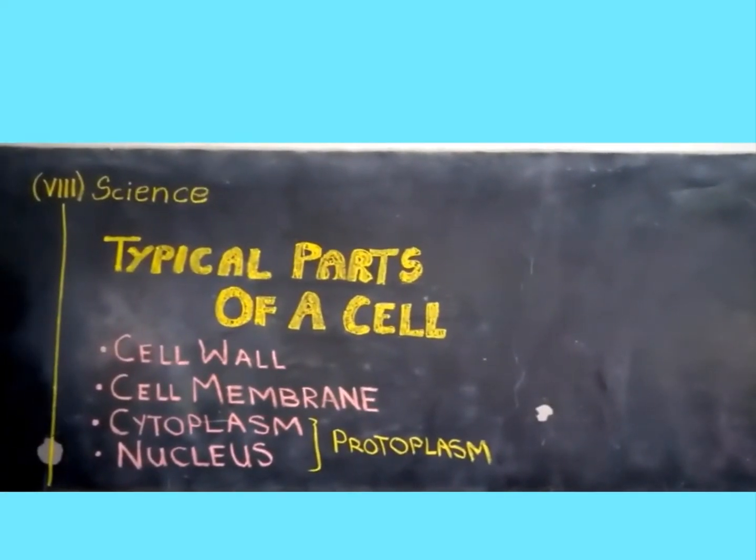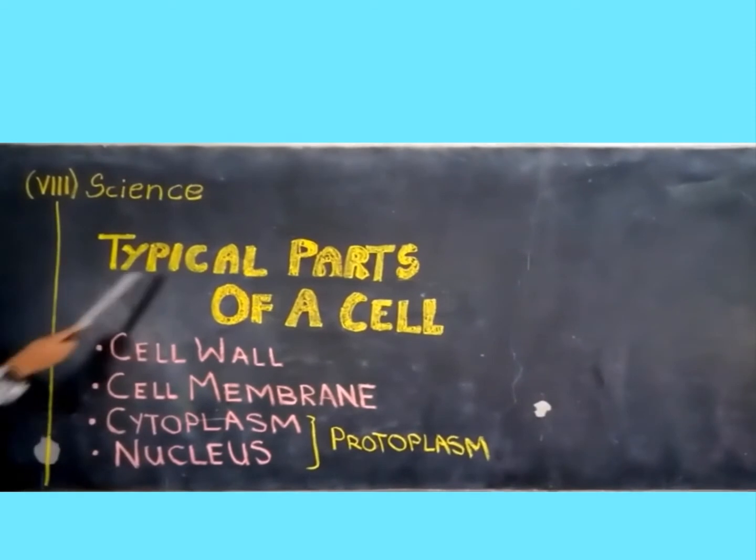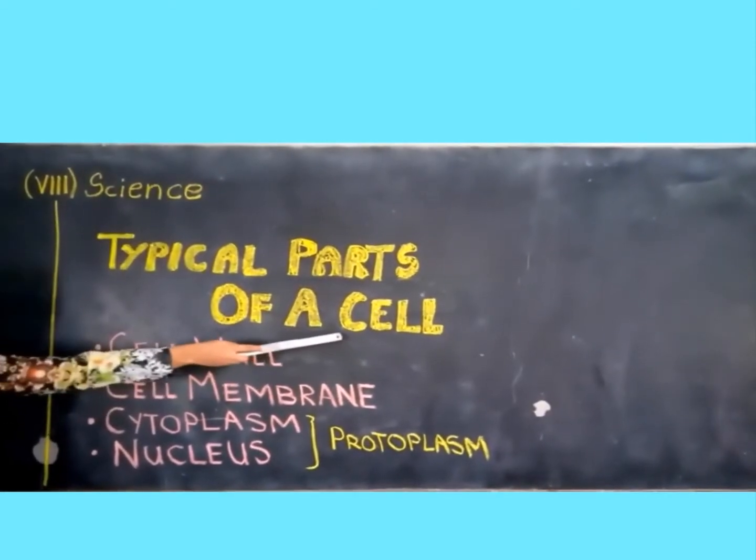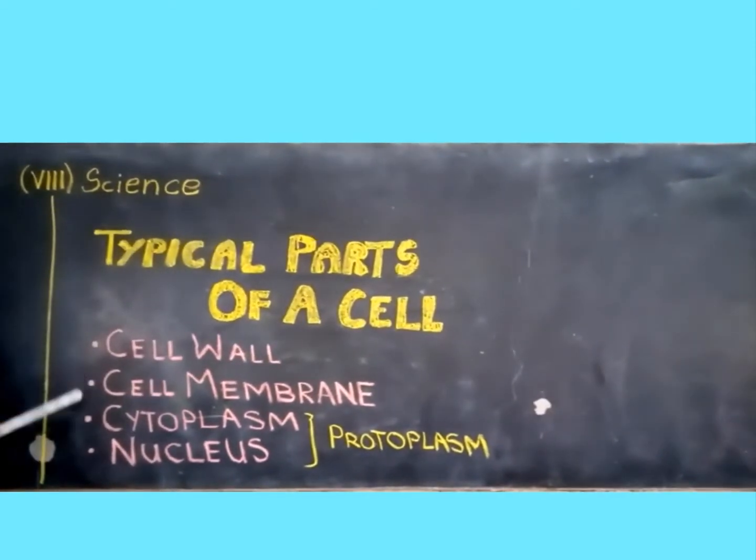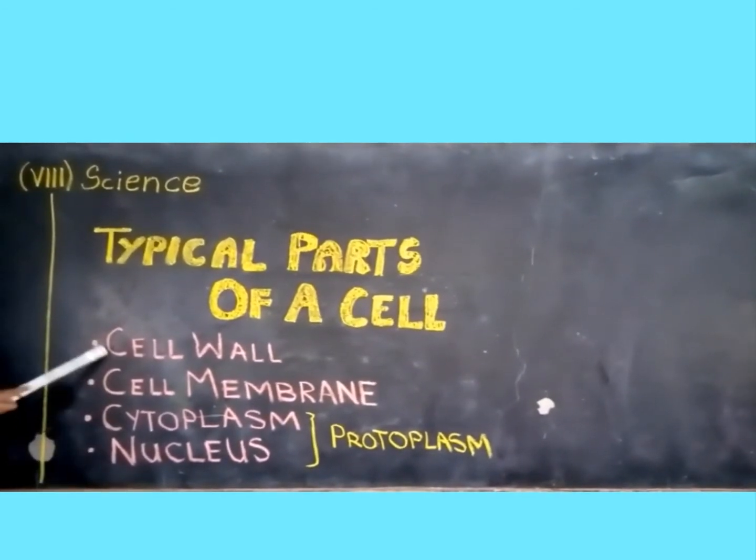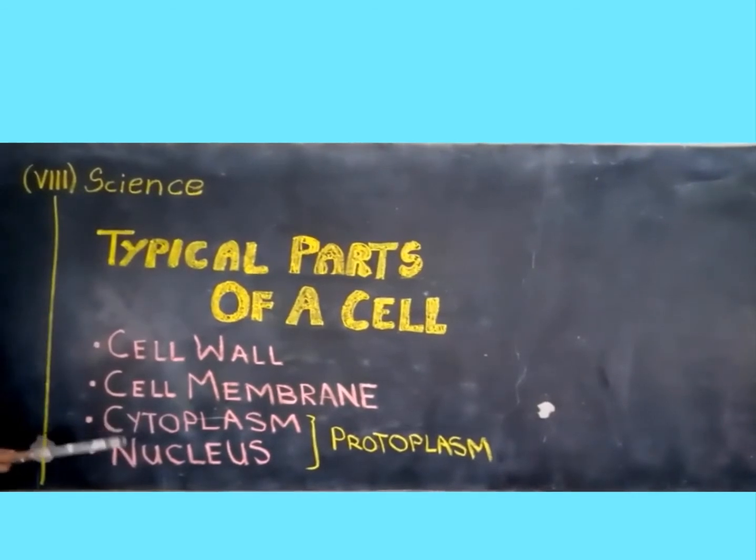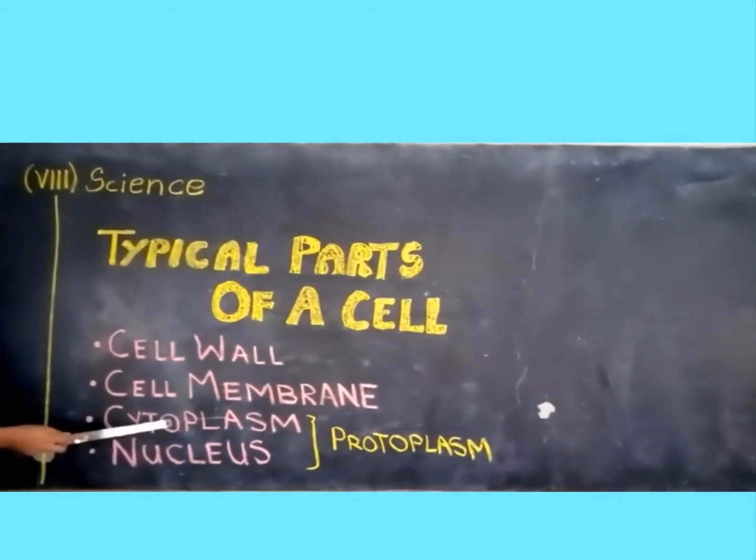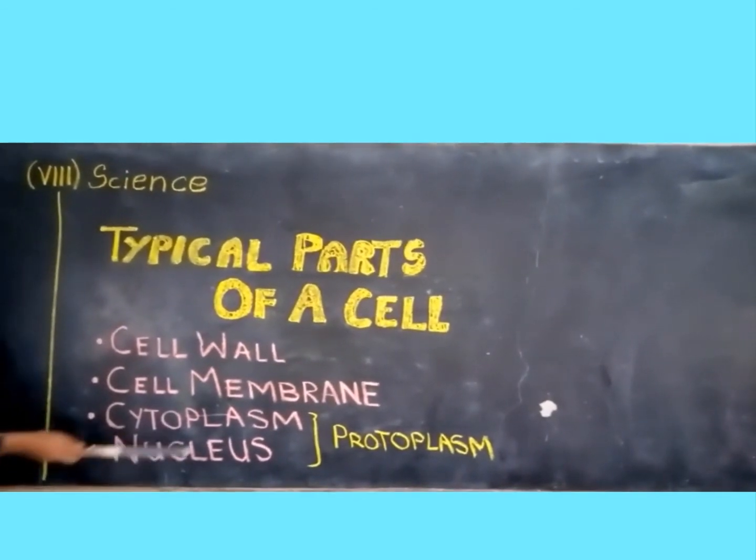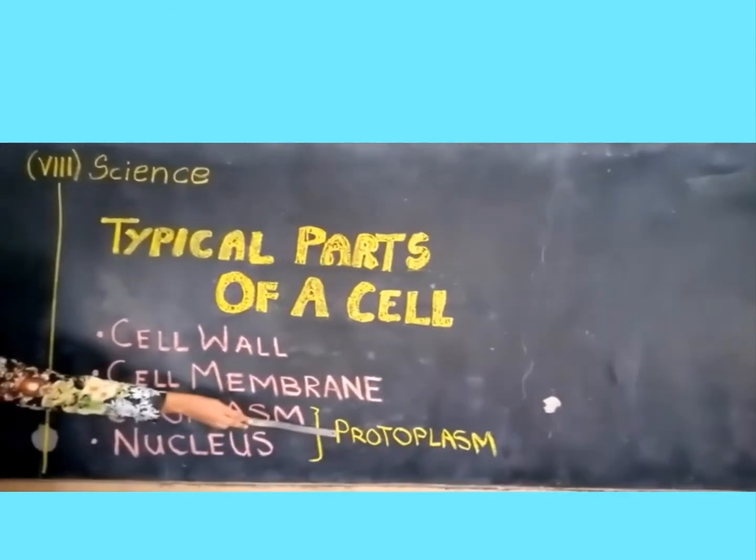Now we are going to study about the typical parts of a cell. The cell consists of four main parts: cell wall, cell membrane, cytoplasm, nucleus. The cytoplasm and nucleus together form the protoplasm.